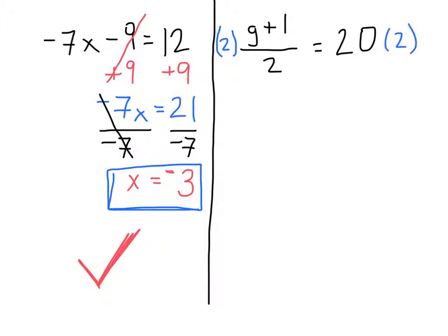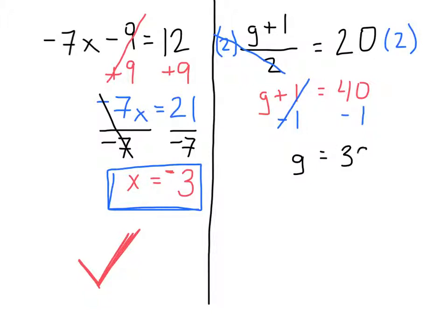The 2s cancel out, and all we have left on the left side is g plus 1. On the right side, 20 times 2 is 40. Now we have our one-step equation: g plus 1 equals 40. The opposite of addition is subtraction, so we subtract 1 from both sides. The plus 1 and minus 1 cancel out, leaving g on the left. On the right, 40 minus 1 equals 39. So g is equal to 39.